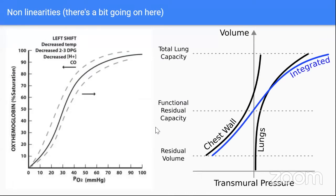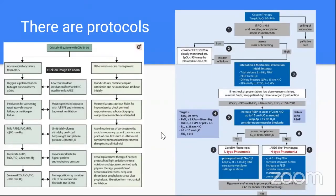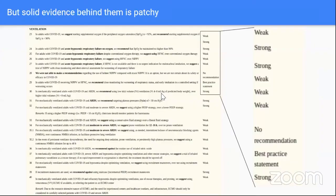The key point with respiratory physiology graphs is that they're non-linear — there's a bunch of non-linear stuff going on. Looking at the latest guidelines, there have been some changes in thinking: there are now two types of ARDS — H-type and L-type — where we used to think of only one. The evidence base guiding all of this is quite weak, which speaks to the earlier point about needing randomized controlled trials.